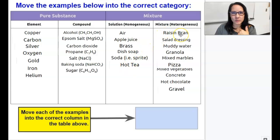In heterogeneous, which is a mixture, you have raisin bran, salad dressing, muddy water, granola, mixed marbles, pizza, mixed vegetables, concrete, hot chocolate, which is tricky, and gravel.